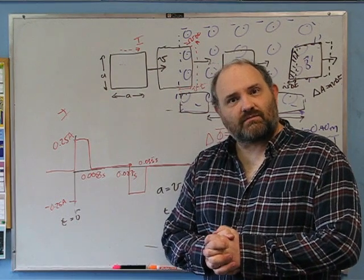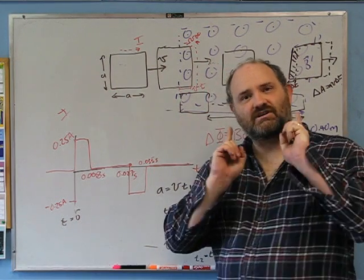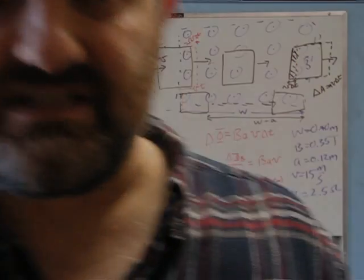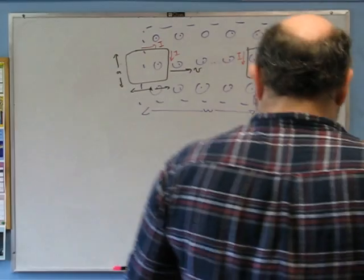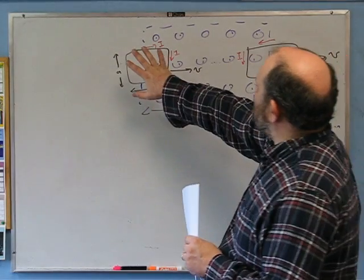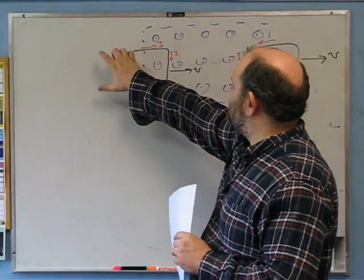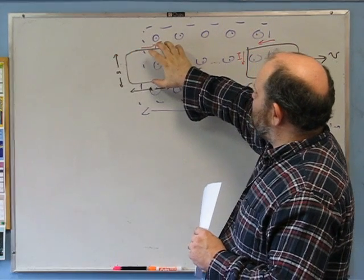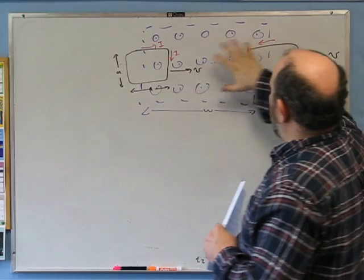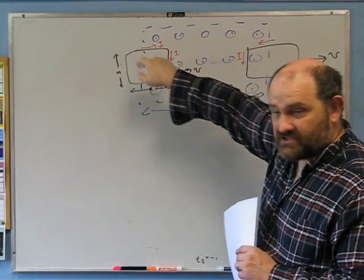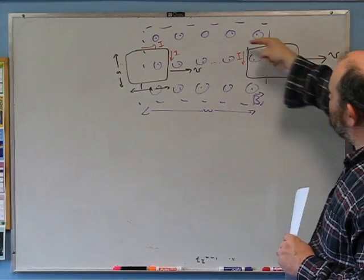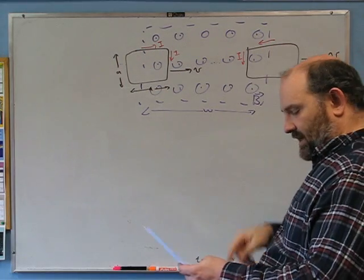Now for the fourth problem: we have the same situation from before. There's an induced current as the loop comes in, no current while it's inside, and an induced current in the opposite direction on the way out.